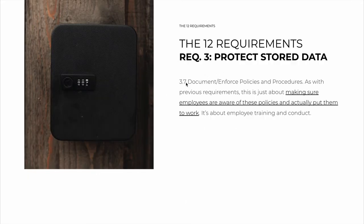And finally, 3.7 is our old friend — the usual document and enforce policies and procedures sub-requirement. As with previous requirements, this is just about making sure that employees are aware of these policies and actually put them to work: how keys are stored, how keys are replaced, how to mask personal account numbers, and so on.